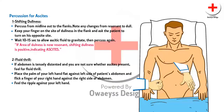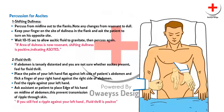If the abdomen is tensely distended and you are not sure whether ascites is present, feel for a fluid thrill. Place the palm of your left hand flat against the left side of the patient's abdomen and flick a finger of your right hand against the right side. Feel for the ripple against your left hand. Ask an assistant or the patient to place the edge of their hand on the midline of the abdomen — this prevents transmission of the ripple through the skin. If you still feel a ripple against your left hand, the fluid thrill is positive.